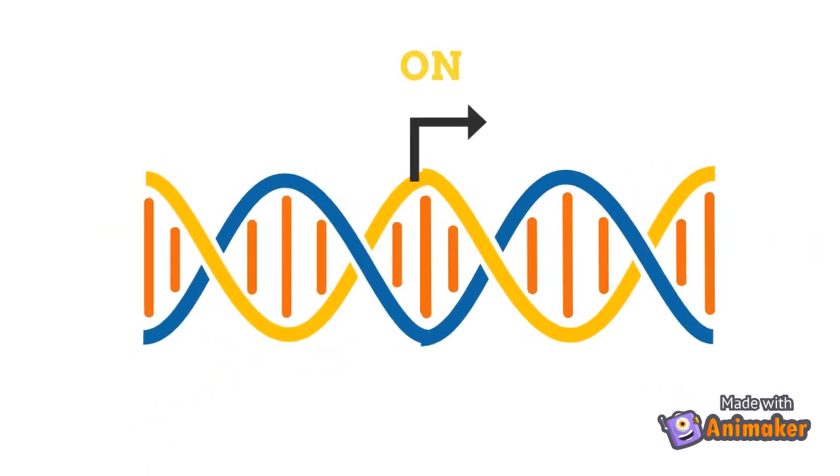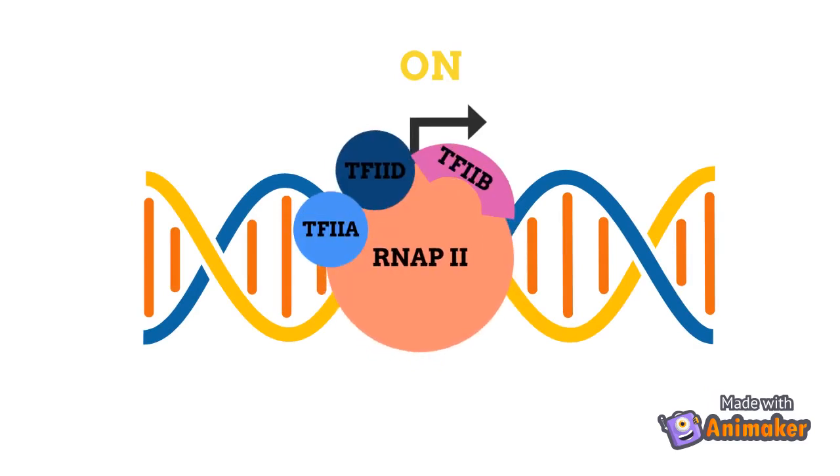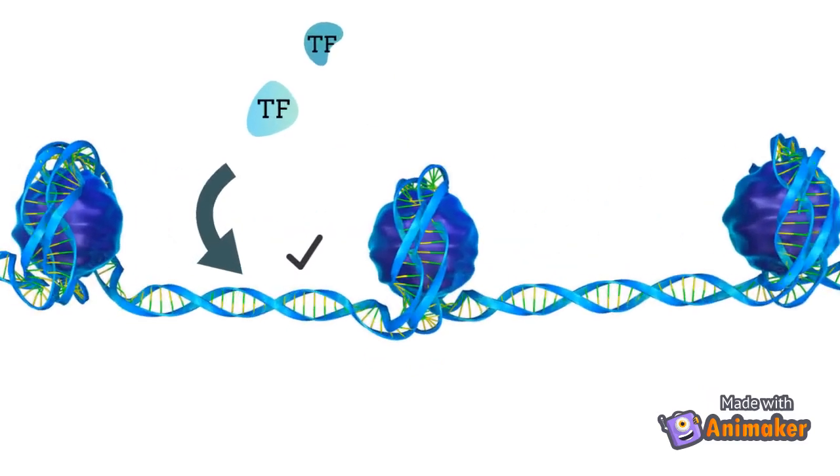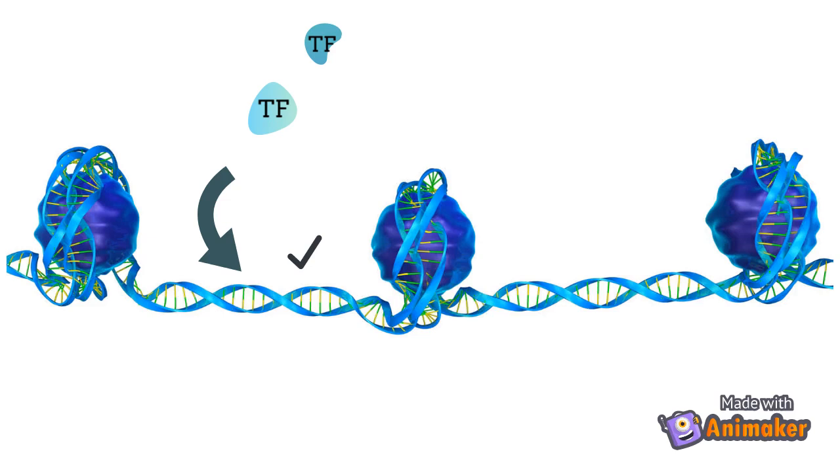Those are the sequences recognized by transcription factors that help recruit RNA polymerase to turn genes on. For genes to be transcribed, transcription factor binding sites need to be devoid of nucleosomes and accessible to transcriptional machinery.